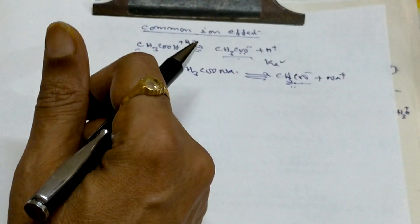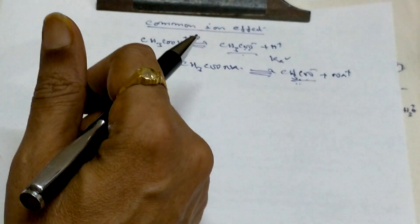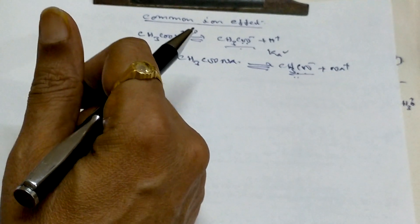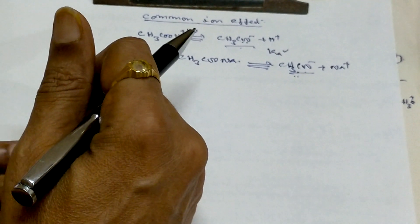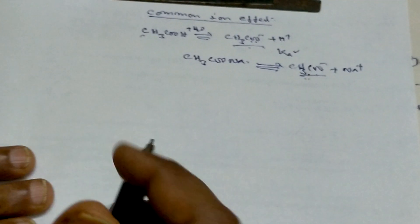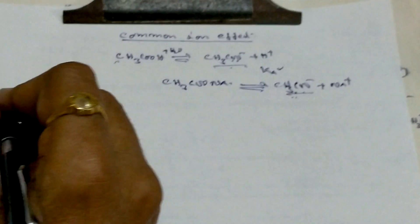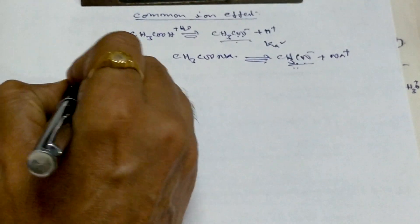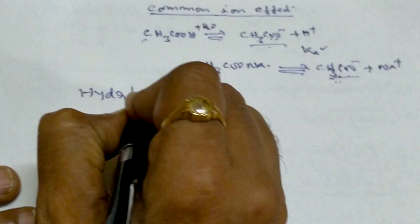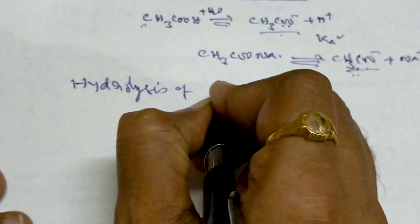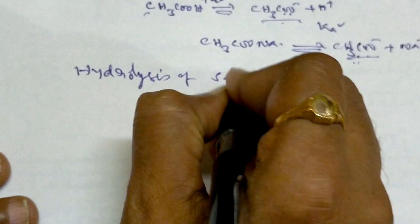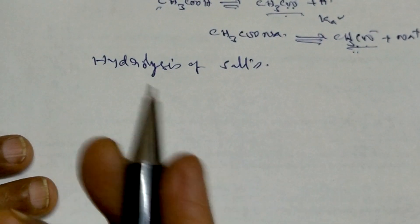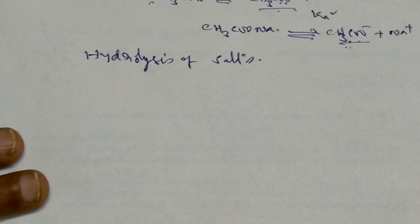That is the common ion effect — very simple. Most of the time it comes into the picture in this way. Next comes the hydrolysis of salts — listen carefully — hydrolysis of salts and how it affects the pH.